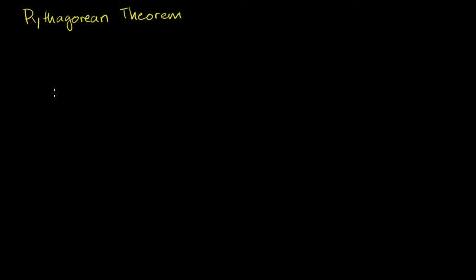A right triangle is a triangle that has a 90 degree angle in it. As drawn here, this is our 90 degree angle. If you've never seen a 90 degree angle before, the way to think about it is: if one side goes straight left to right and the other side goes straight up and down, these sides are perpendicular — the angle between them is 90 degrees, or it is a right angle.